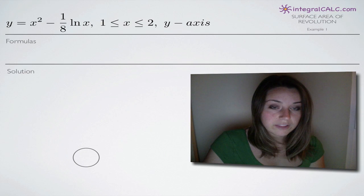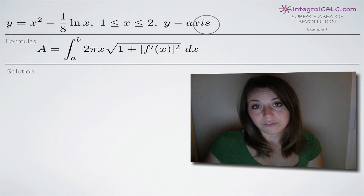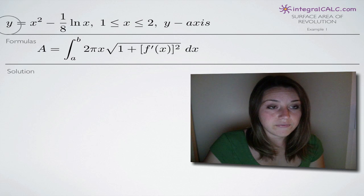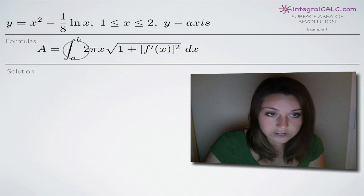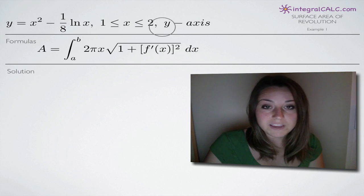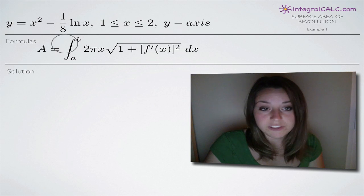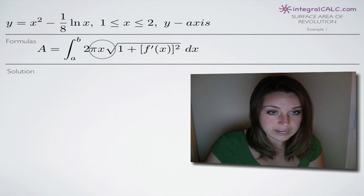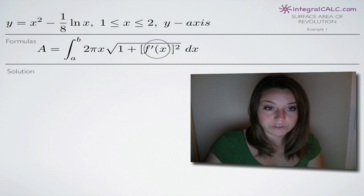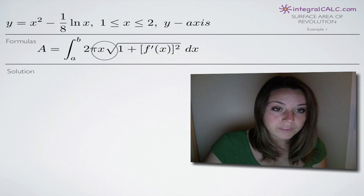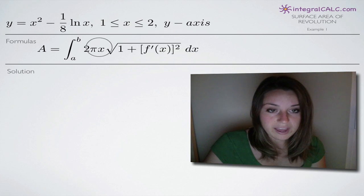Let's take a look at what this is going to look like. Depending on which axis you're revolving around — whether it's the y-axis or the x-axis — and the form in which you're given your equation, that's going to change your formula a little bit. Because we're revolving around the y-axis and given the equation in this form, we put x right here. That x is what's important to pay attention to when revolving around the y-axis.